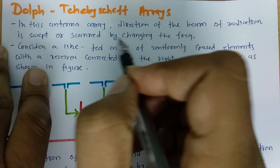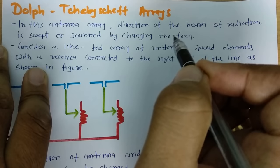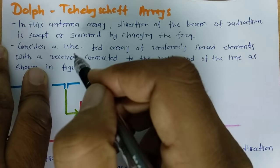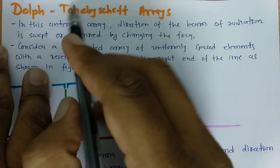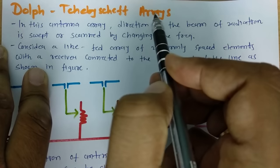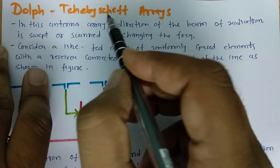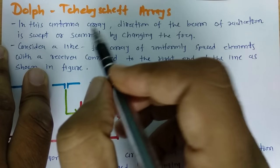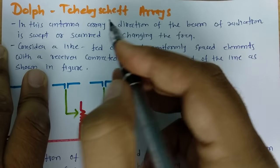I will explain how we can change direction of antenna by changing frequency later. First of all, let us try to understand those basics which is there with Dolph-Chebyshev Array. The basic agenda of Dolph-Chebyshev Array is to change direction of beam by changing frequency.